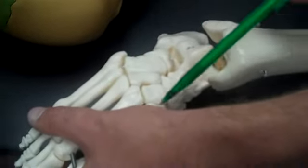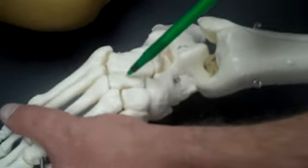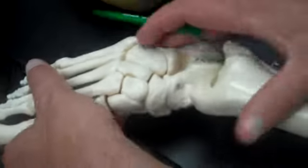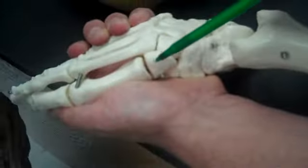The cuneiform bones. We have medial, intermediate, lateral, from inside to out. Cuneiform bones. These three little ones right there. One, two, three.